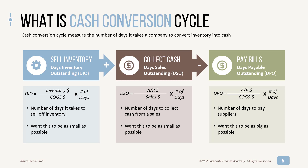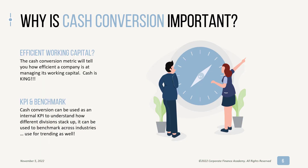So the cash conversion cycle is DIO plus DSO minus DPO. Why is this important? It's really a measurement of whether you are efficient with your working capital. The cash conversion metric tells you if you're doing a good job or not. Ultimately, cash is king, and if you're not efficient with working capital, you won't be solvent as a business. Cash conversion is also a great KPI or benchmark — you can use it to set targets, for trending to see if you're improving, to compare different divisions internally, or to benchmark across your industry. It's a very useful tool.